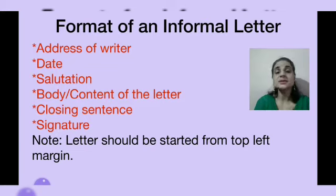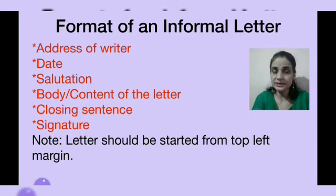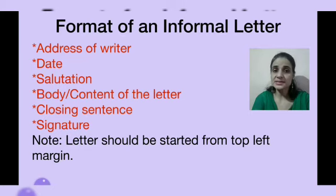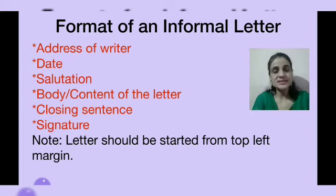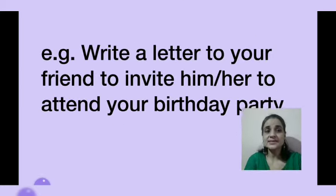This is a very important part — the format of an informal letter. A letter should be written in the correct format, so format is very important. First, write the address of the writer at the top left corner — you can use two lines for that, along with the city name. Leave one line gap and mention the date of writing. Again, one line gap and write the salutation — the name of the person you are writing to. Then start the main content, followed by the closing sentence, and at last write the name of the writer along with the subscription. An important note: the letter should start from the top left margin, and maintaining the margin is very important.